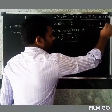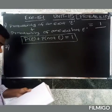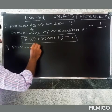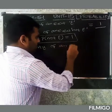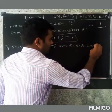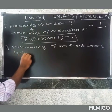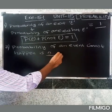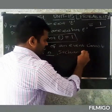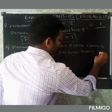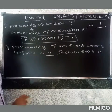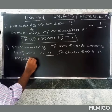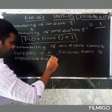Second question: What is the probability of an event that cannot happen? The probability of an event that cannot happen is 0.